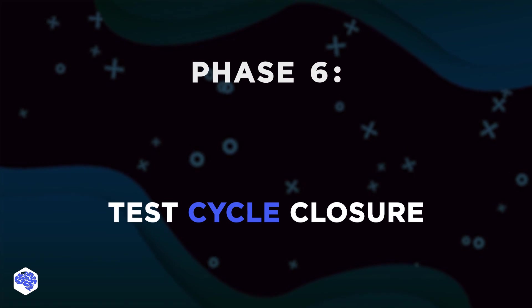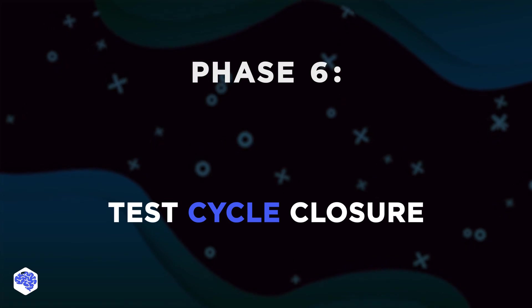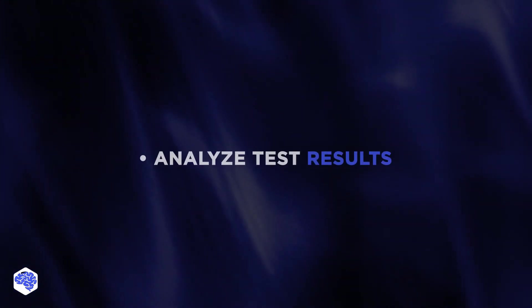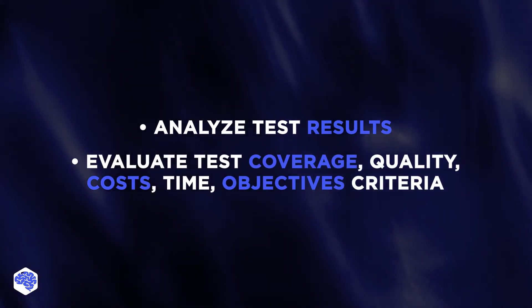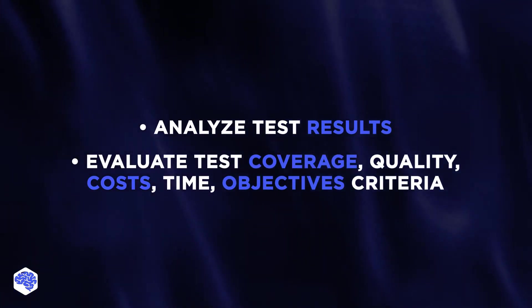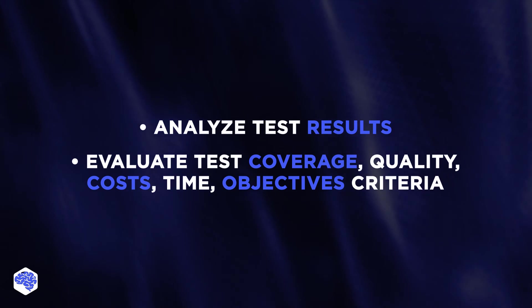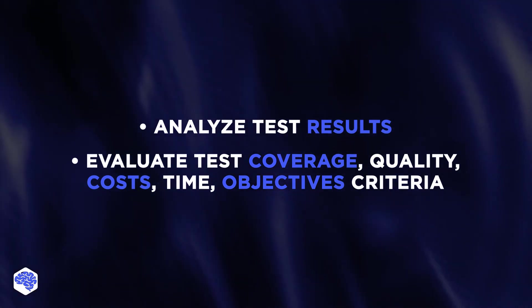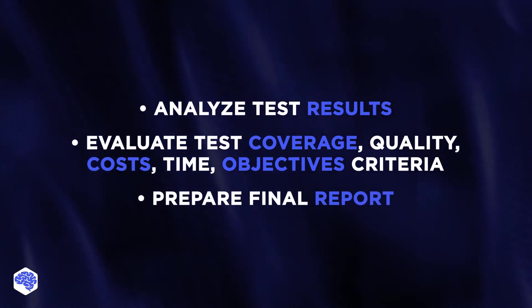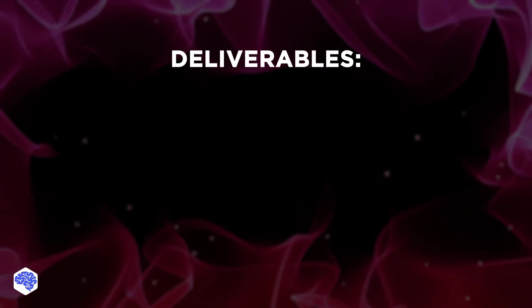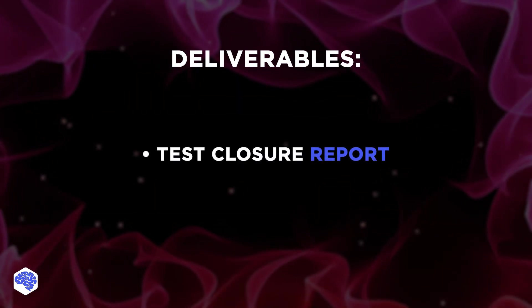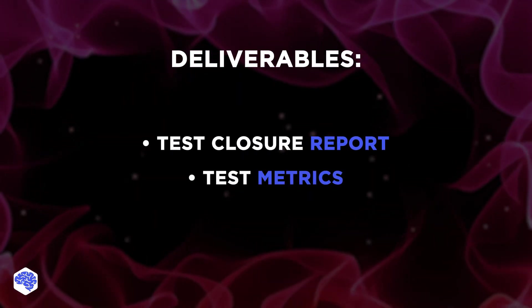And finally, Phase 6: Test Cycle Closure. This is about measuring results, so we conduct test results analysis, evaluation of test coverage, quality, costs, time and objectives criteria, and preparation of the final report. Deliverables of the final phase are a test closure report and test metrics.